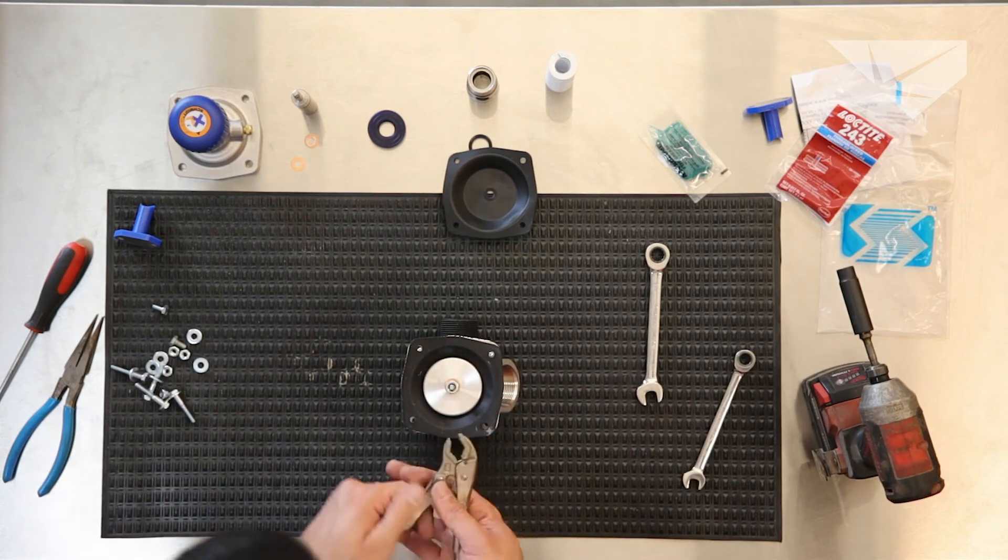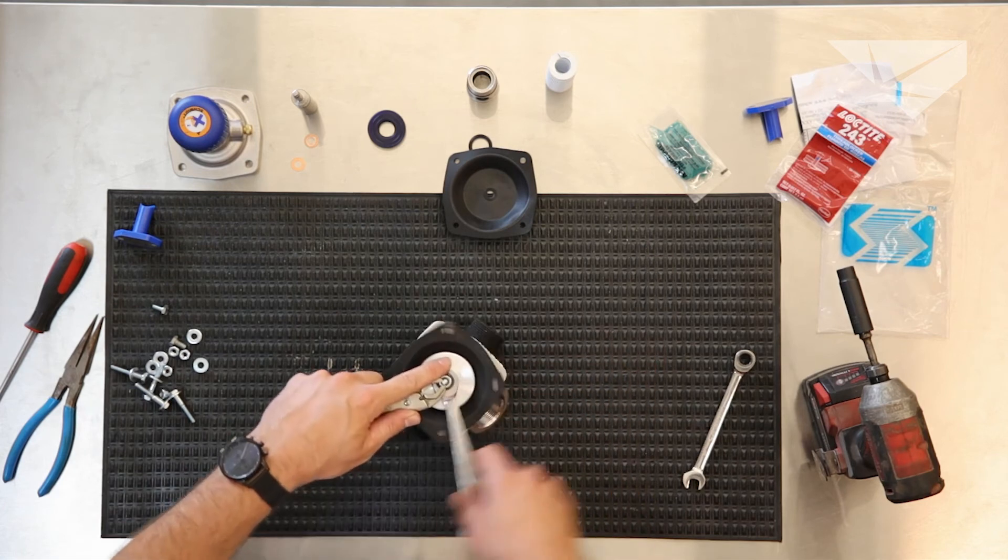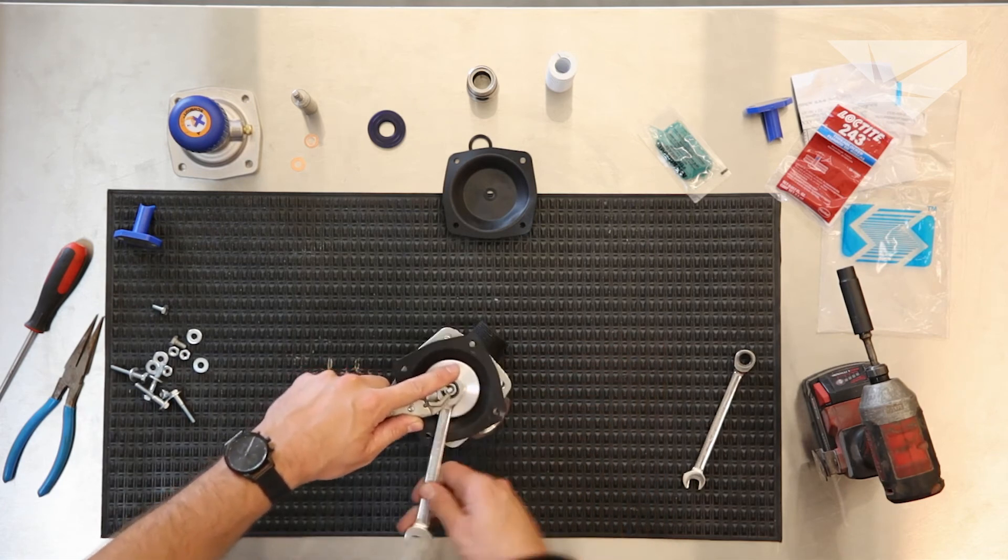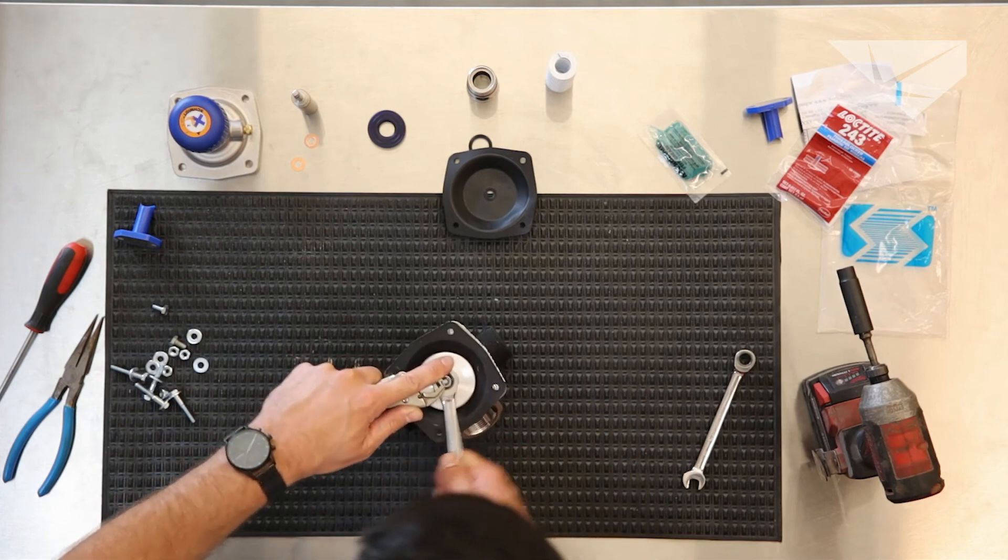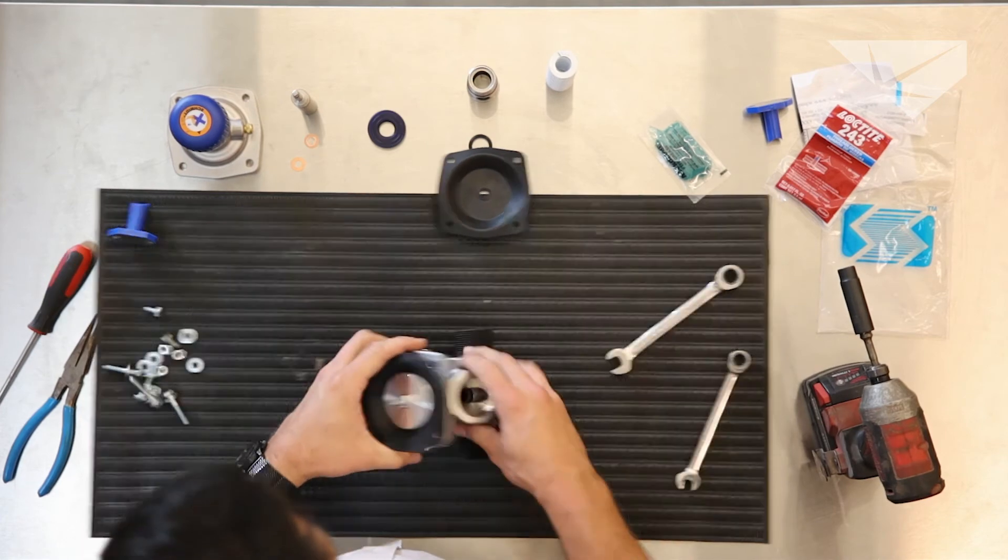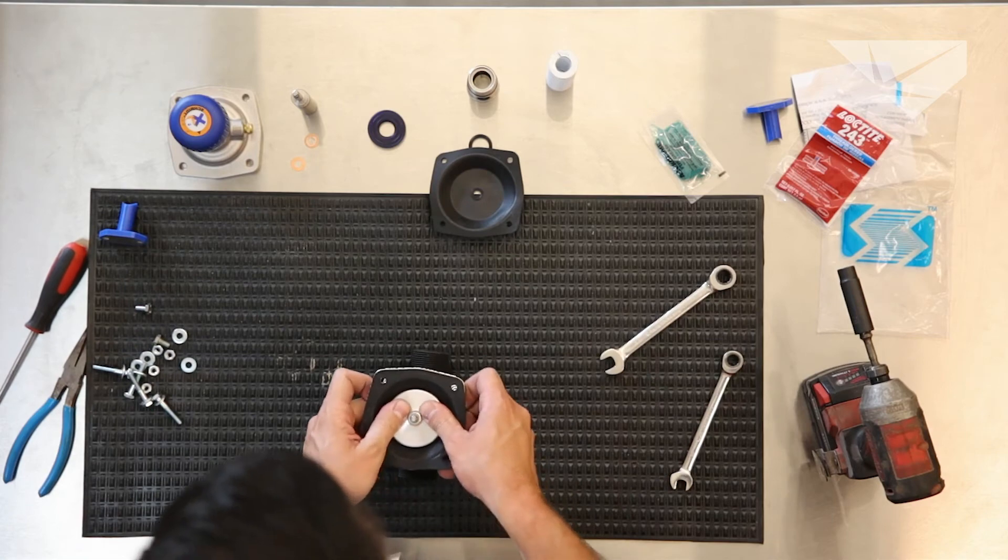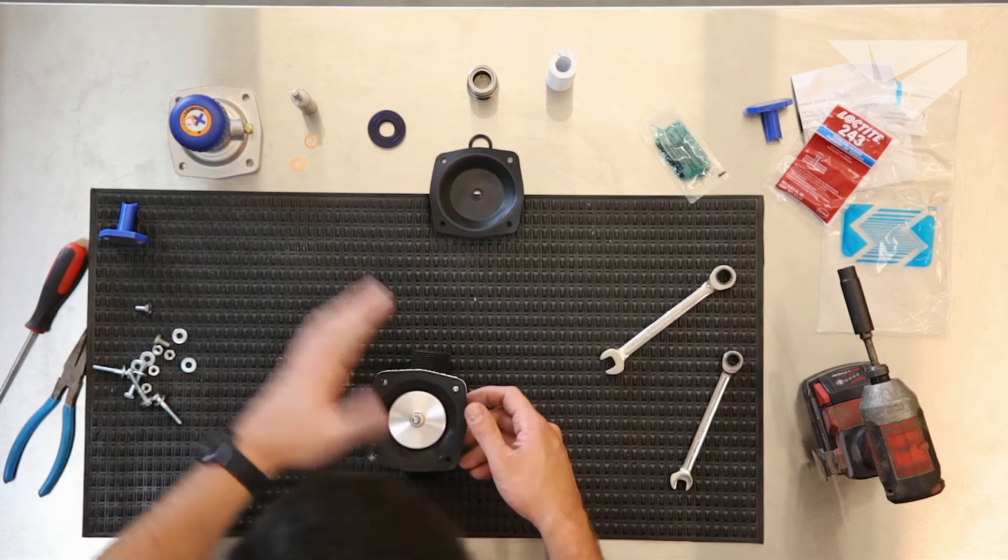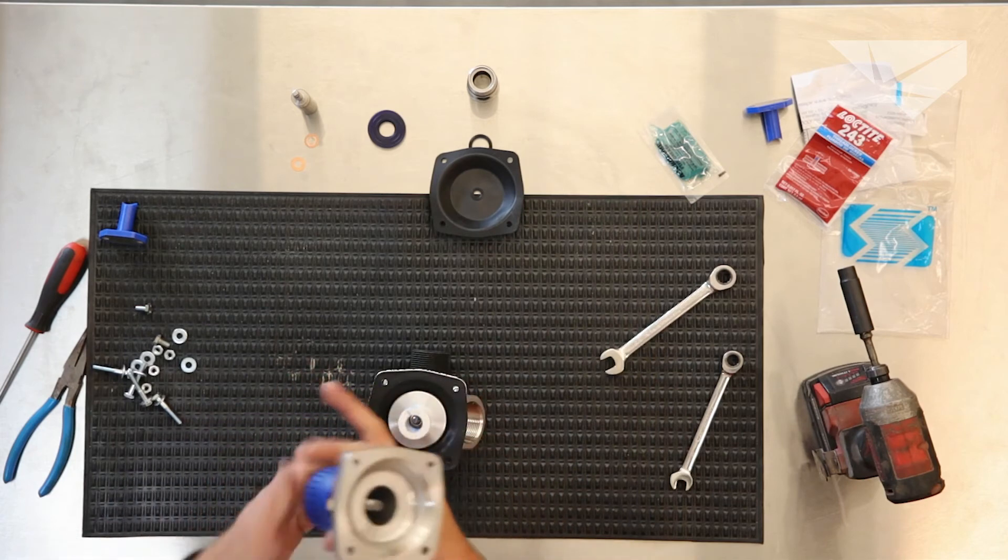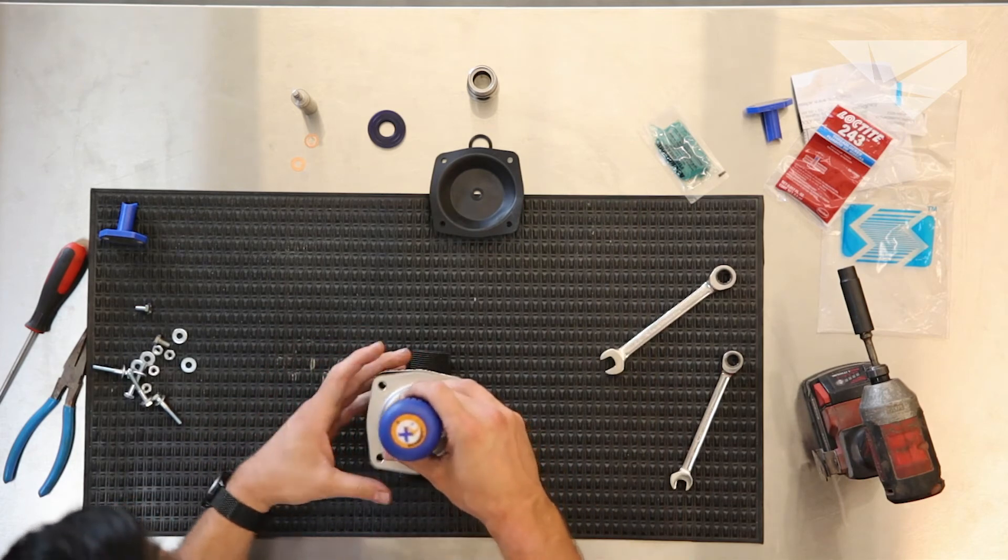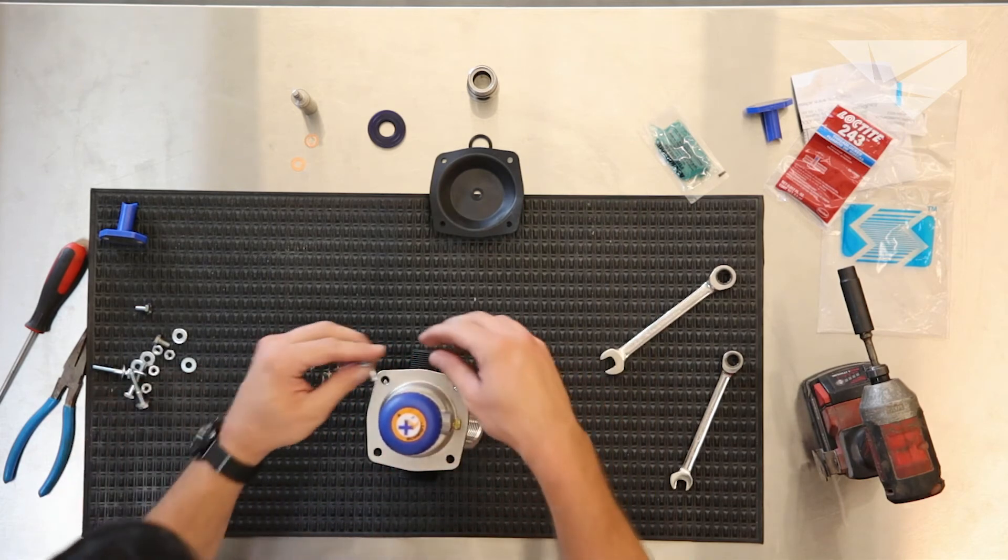We'll use our vice grips and clamp the post again. We'll walk the nut back onto the valve. Make sure things tighten up there. From there, we're going to go ahead and push our piston all the way down on the valve. Use the white spring with top assembly and then bolt the top side back down.